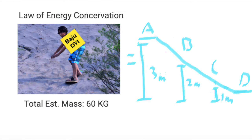Next is the law of energy conservation. Basically the potential energy, kinetic energy, and mechanical energy. In this example that I created, there are four points of my journey. The four points are different in height from 3 meters in point A to 0 meters on point D. My estimated mass at the time was around 60 kilograms, so we are going to use 60 kilograms in the calculation.